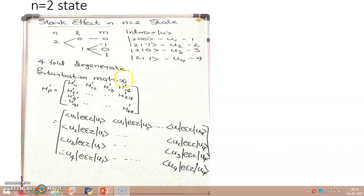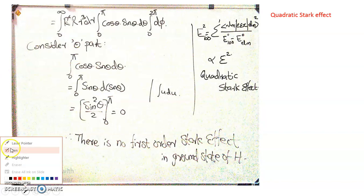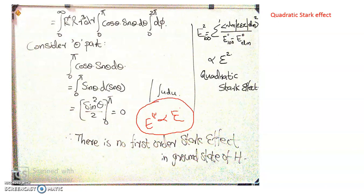We have just seen the Stark effect in the ground state of hydrogen and concluded that there is no first-order Stark effect in the ground state. The linear Stark effect refers to when the first-order correction in energy is proportional to the first power of the magnitude of the applied electric field, epsilon to the power one.